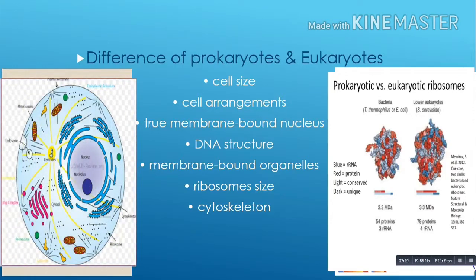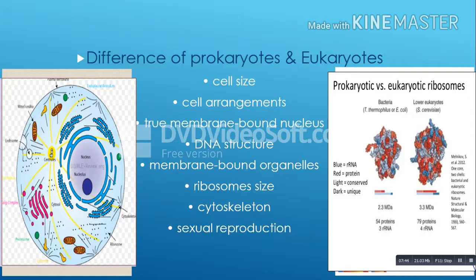Sexual reproduction: most eukaryotes undergo sexual reproduction, while prokaryotes reproduce asexually. Sexual reproduction in eukaryotes results in offspring with genetic material which is a mixture of the parents' genomes. During this process, genetic variation is generated by sexual recombination. On the other hand, a prokaryote will reproduce clones of itself by binary fission, and relies more on horizontal genetic transfer for variation.